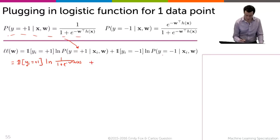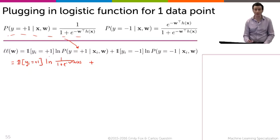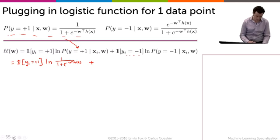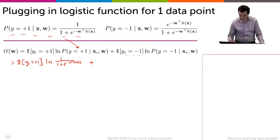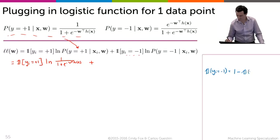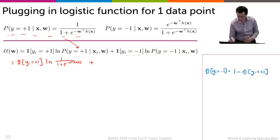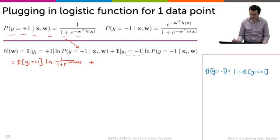Now for the second term, we need to plug in the probability y equals minus 1. But it's a little annoying for the derivation that we have an indicator that y_i is plus 1 and another indicator that y_i is minus 1. So we're going to take this indicator that y_i equals minus 1 and substitute it. The indicator that y_i equals minus 1 can be written as 1 minus the indicator that y_i equals plus 1. When y_i is minus 1, both sides equal 1; when y_i is plus 1, both sides equal 0.